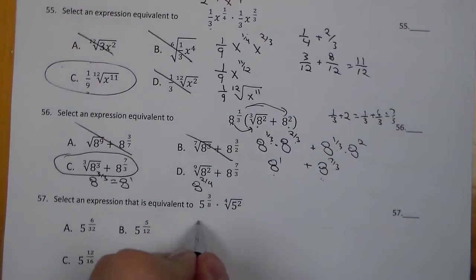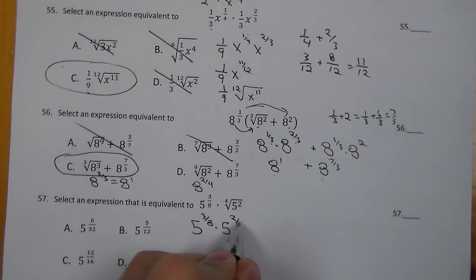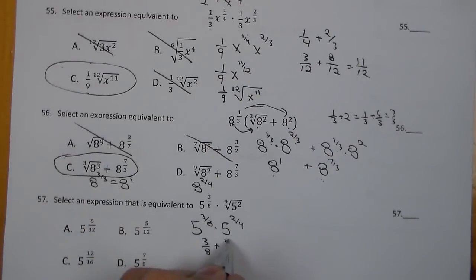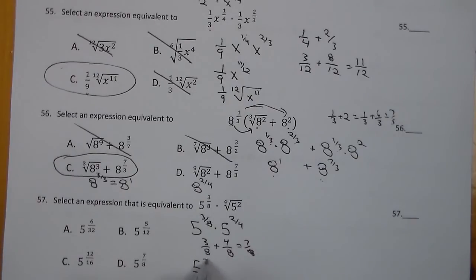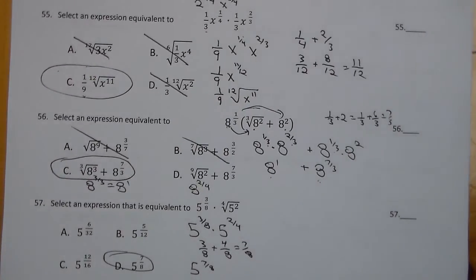For 57, I'm going to get like bases and go to exponential form, then add exponents. Three-eighths plus two-fourths would be 3 eighths plus 4 eighths, which is 7 eighths. So 5 to the seven-eighths — we're going to go with D.